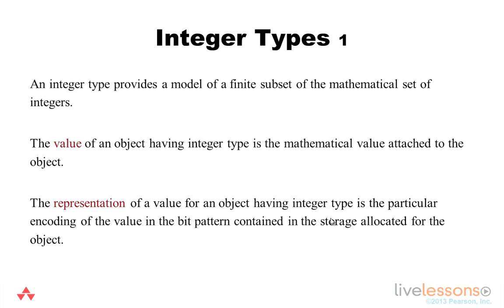Typically integers have infinite range in both the positive and negative space. However, digital representation can only describe a finite subset of that range. The value of an object having integer type is the mathematical value attached to that object.